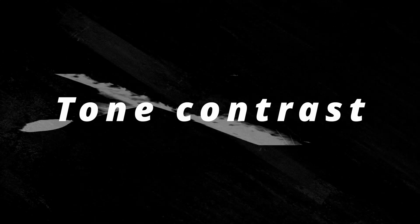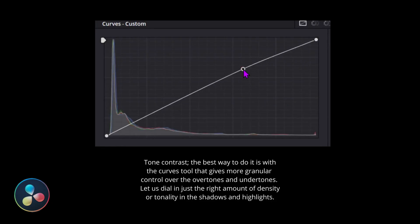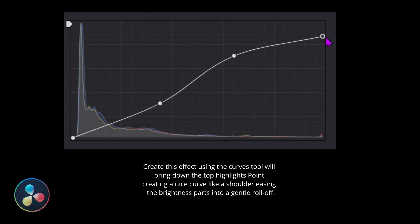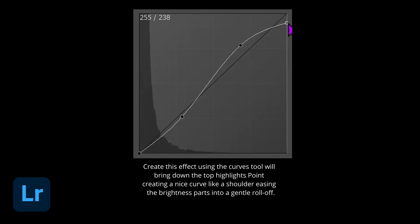The process to edit one picture cinematically in Lightroom and one video cinematically in DaVinci Resolve will be really similar. Tone contrast: the best way to do it is with the Curves tool. That gives more granular control over the highlights and undertones, letting us dial in just the right amount of density or tonality in the shadows and highlights. Roll off: create this effect using the Curves tool. Bring down from the top highlight point, creating a nice S-curve with the brights parsing into a gentle roll off.